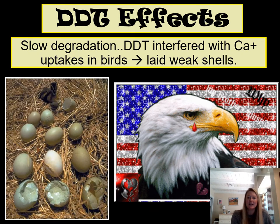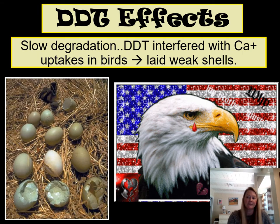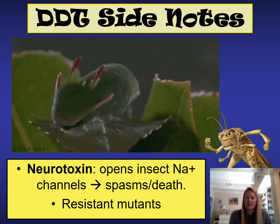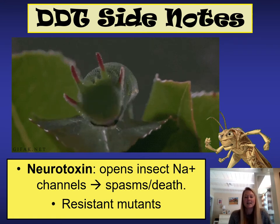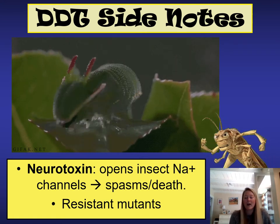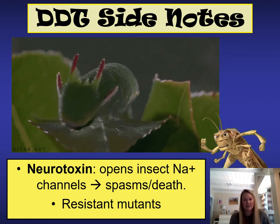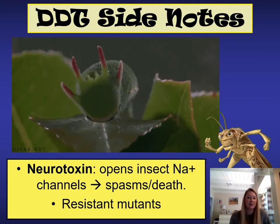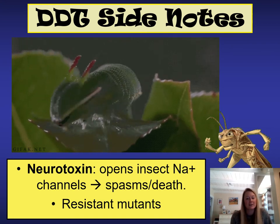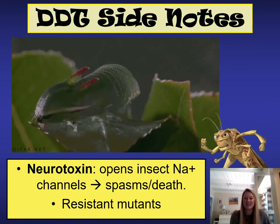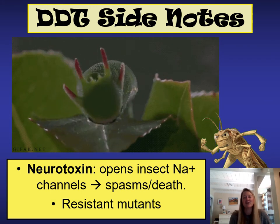As you know, DDT has been banned and the bald eagle has made a recovery because of that ban. Another side note about DDT: it is a neurotoxin, meaning it is a chemical that affects your nervous system. In insects specifically, it causes their sodium channels to open in their nervous system, which leads to cell death and spasms. So insects were being killed through this method. However, scientists did notice that some bugs were actually becoming resistant to DDT — and we're going to talk about the pesticide treadmill in just a moment.